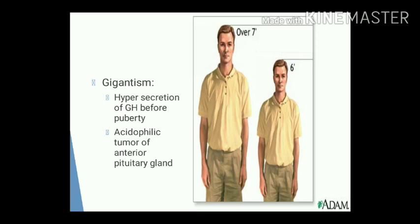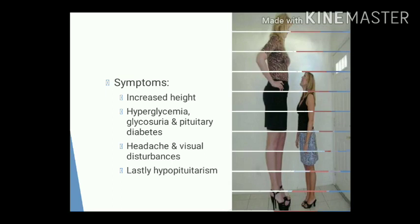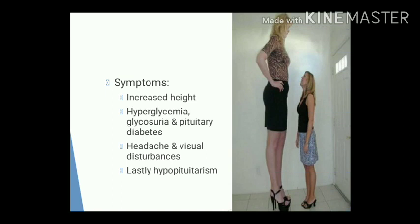Clinical features due to hypersecretion of growth hormone include increase in height. Excessive growth of the long bones results in abnormal height — may be 7 or 8 feet or above — with huge stature. The person becomes a giant.